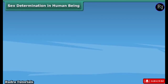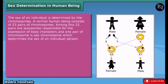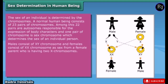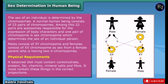Sex determination in human beings is determined by chromosomes. A normal human being consists of 23 pairs of chromosomes: 22 pairs are autosomes responsible for the expression of body characters, and one pair is sex chromosomes, which determines the sex of an individual. Males consist of XY chromosomes and females consist of XX chromosomes. A sex chromosome from a female parent, who has two X chromosomes, contributes one X. A balanced diet must contain carbohydrates, protein, fat, vitamins, mineral salts, and fiber in the correct proportions.